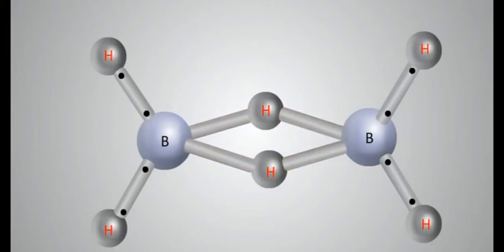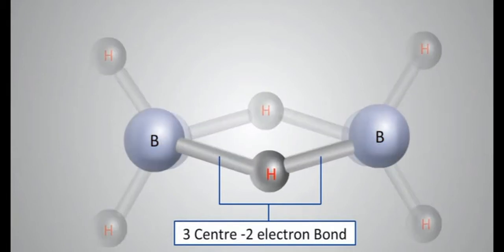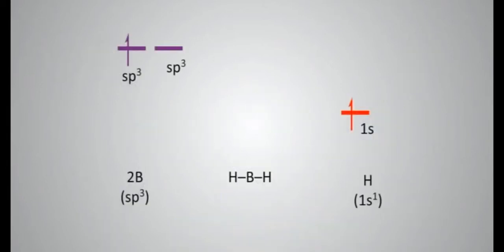These are bonded by three center electron pair bonds, which involve one electron pair only, two electrons, but bind three atoms: B, H, and B. Such a bond is indicated by H-B-H bond, shown in the animation, and is known as three center electron pair bond.